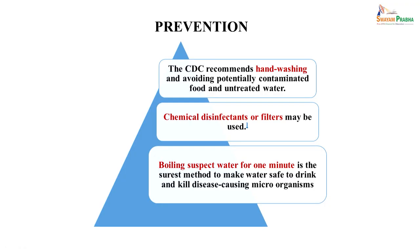For prevention, the CDC recommends hand washing and avoiding contamination of food and water as the main methods to prevent Giardia infection. Chemical disinfectants or filters can also be used. Boiling suspect water for one minute is the surest method to make water safe to drink and kill disease-causing organisms. Prevention basically relies on hand washing, safe water, disinfectants, filtration, or boiling for one minute to help prevent infection in the long term.